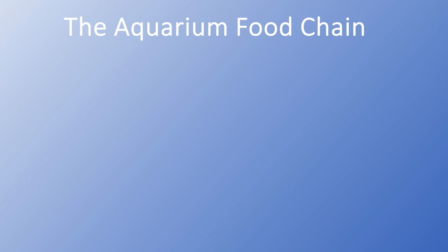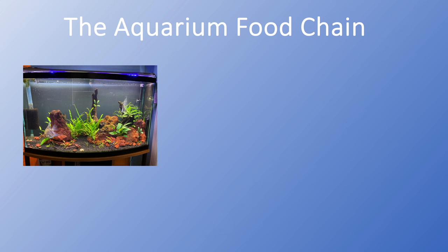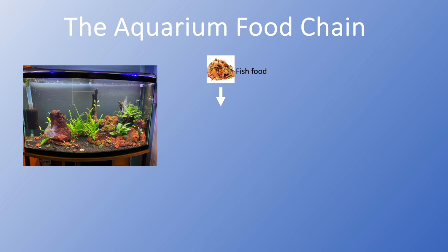Essentially, Father Fish is discussing aquarium food chains versus the aquarium food web, and he's staunchly against aquarium food chains. An aquarium food chain can be defined as the flow of energy in an ecosystem. At the top, where does the energy come from? It comes in the form of fish food, as you might have guessed. So we feed our fish, the fish digest it, and then they extract those nutrients and calories from that food.